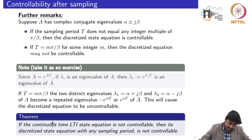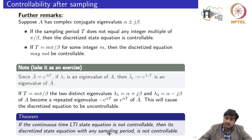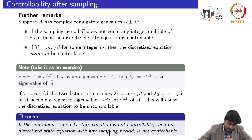Finally, if the continuous-time system is not controllable, then its discrete-state equation with any sampling period will never be controllable. If the LTI system is controllable, one can compute the sampling times for which the discrete-time version of the state equation is also controllable. But if the original pair is not controllable, then for any sampling period the discrete-time version will never be controllable.